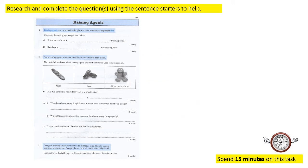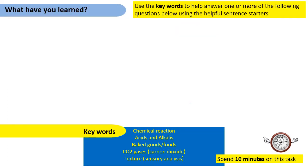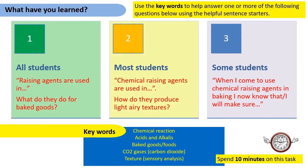Attached to the show as homework is a raising agents question sheet. Answer the first two questions on chemical raising agents; the remaining questions require a little more research, covering other raising agents such as yeast, steam, and air. For the last two questions, command words such as 'explain' and 'discuss' — ringed in red — require more developed sentences. Examples of how to start sentences are provided to help you answer those questions.